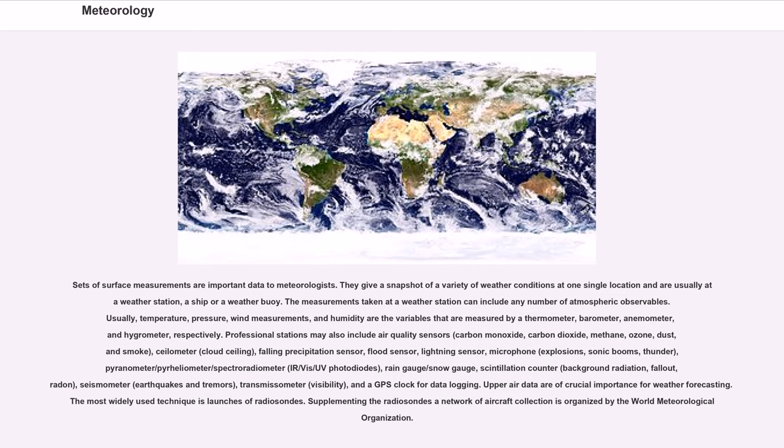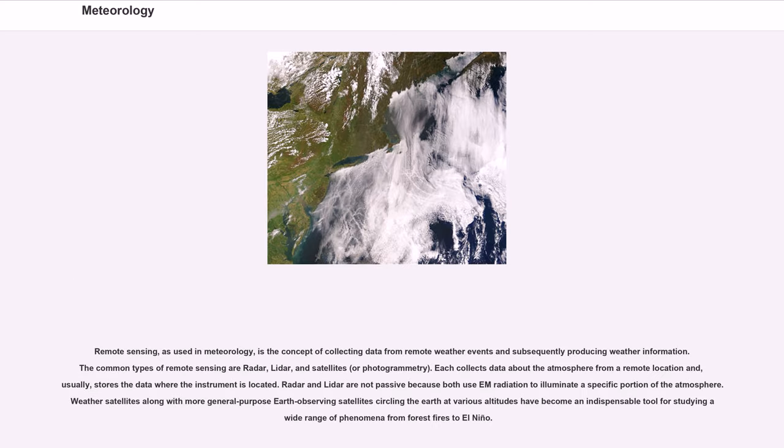Supplementing the radiosondes a network of aircraft collection is organized by the World Meteorological Organization. Remote sensing, as used in meteorology, is the concept of collecting data from remote weather events and subsequently producing weather information. The common types of remote sensing are radar, lidar, and satellites. Weather satellites along with more general-purpose Earth observing satellites circling the Earth at various altitudes have become an indispensable tool for studying a wide range of phenomena from forest fires to El Niño.